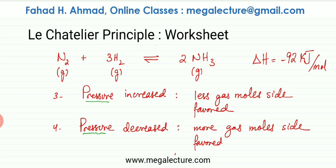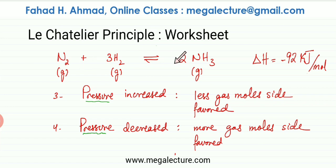Remember, pressure only applies to gases — you only have to focus on the gases. When you increase pressure, you are compressing it, so less gas is going to be produced. The side that has fewer gas moles would be favored. If pressure is decreased, then the more gas mole side is favored. Count only gas moles — no need to count solid and liquid moles.